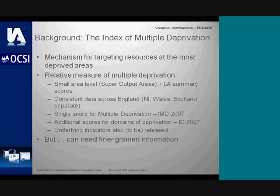The index of deprivation is extremely useful. However, the perception for rural areas is that it doesn't get under the skin — it doesn't get down to a fine enough level of detail to identify small pockets of deprivation. The Community Council of Norfolk was very interested to see whether you could model or estimate deprivation levels at a small area and then analyse and see what you can pick out.